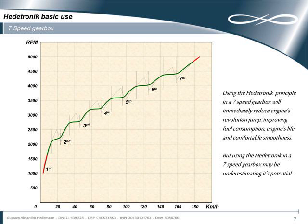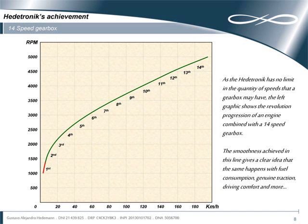Using the Headatronic technology in the same seven-speed gearbox reduces significantly fuel consumption, as well as it softens driving. Enlarging the quantity of speeds, thanks to the Headatronic technology, allows to improve even more the results. This 14-speed graphic shows how soft future driving may be.